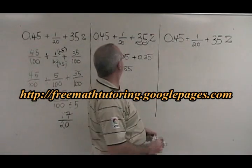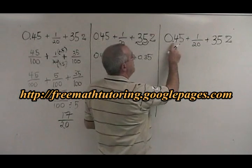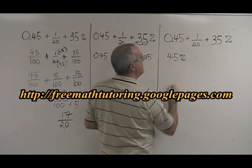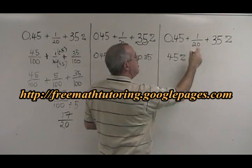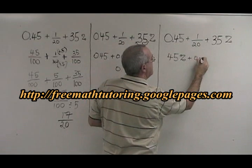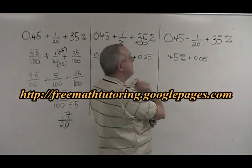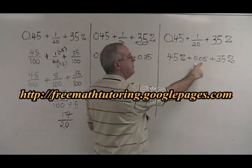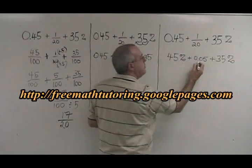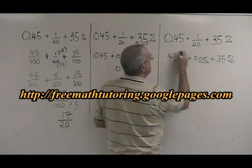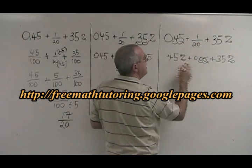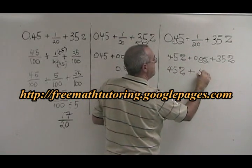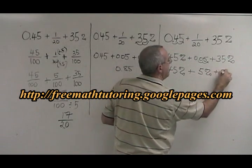What if we want to convert everything into a percentage? 0.45 is equal to 45%. 1 divided by 20 is equal to 0.05, as we saw in the last example, plus 35%. To convert 0.05 to a percentage, we move the decimal two places to the right, which is the same thing we did here. So 45% is our first term, this becomes 5%, and this is still 35%.